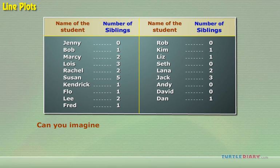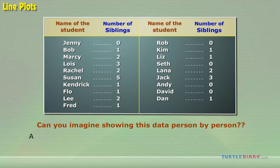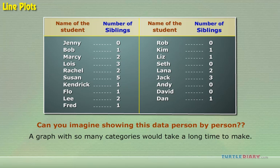Can you imagine showing this data person by person? A graph with so many categories would take a long time to make. Also, it will look complicated and will not be very helpful.